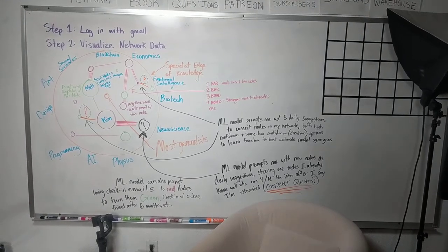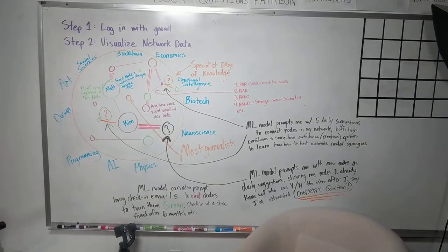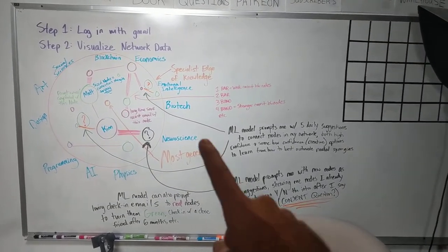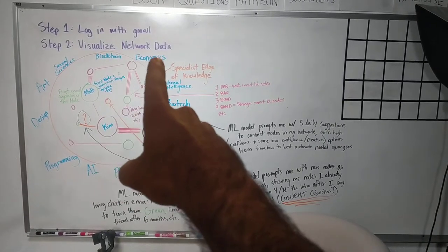All right, so here's a little bit of what I've been working on, illustrating. So as you can see here, people log in with their Gmail account. And then step two is we visualize their network data.